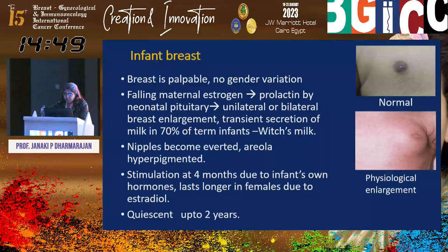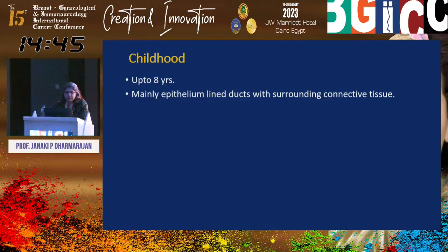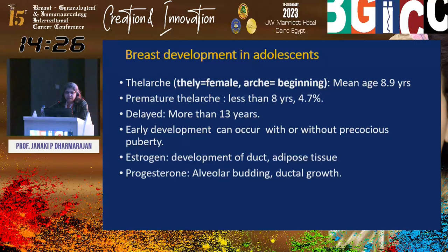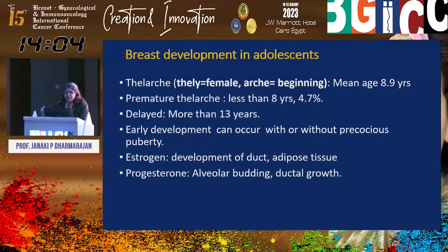Thereafter the breast is quiescent up to two years. Then up to eight years, mainly the epithelium-lined ducts develop with surrounding connective tissue. Idiopathic premature thelarche is seen in females between age one to three years and is not associated with precocious puberty — only reassurance is needed. Breast development in adolescence usually begins as thelarche at a mean age of 8.9 years. Development before age eight is called premature thelarche, comprising 5% of cases; no development up to 13 years is delayed thelarche. Estrogen is responsible for development of ducts and adipose tissue; progesterone leads to alveolar budding and ductal growth.